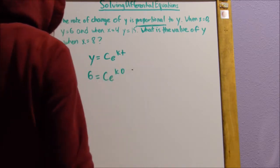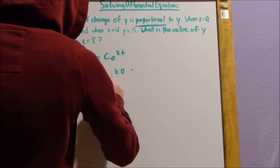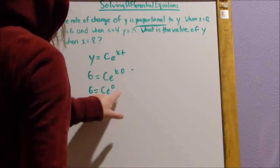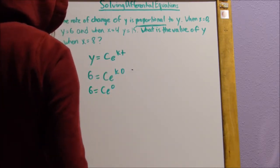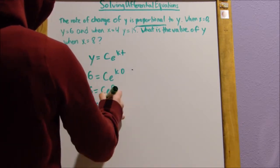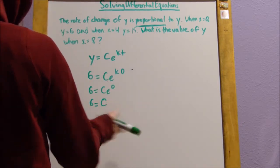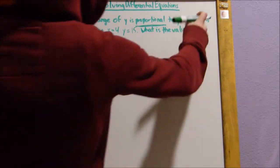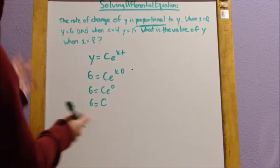So 6 equals c, e to the k times 0. e to the k times 0, 0 times k, that's always just going to be 0. So 6 equals c, e to the 0. e to the 0, anything to the 0th power is 1. So 6 equals c. We figured out that 6 is going to be our initial amount.